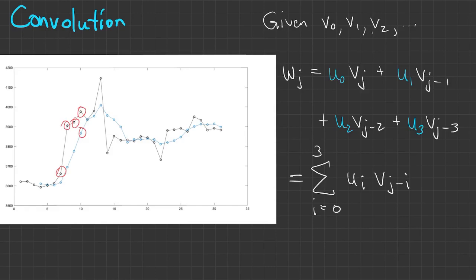And when we write this sum, you'll notice that the indices of the two vectors here always add up to J when I'm trying to find Wj.